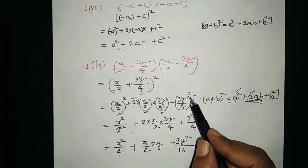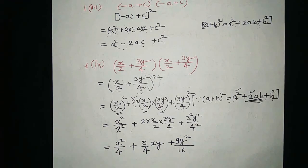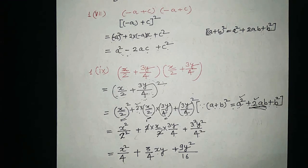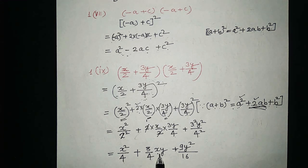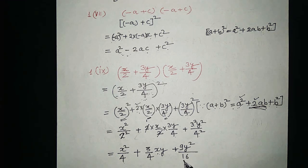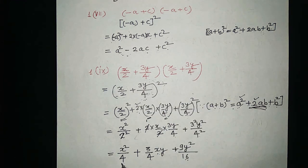Solving: x/2 whole square is x squared upon 4. For 2 times x/2 times 3y/4, the 2 and 1/2 cancel to give 1, so we get 3xy/4. And 3y/4 whole square: 3 squared is 9, y squared remains, and 4 squared is 16, giving 9y squared upon 16. So the product of these two binomials is x squared upon 4 plus 3xy/4 plus 9y squared upon 16.